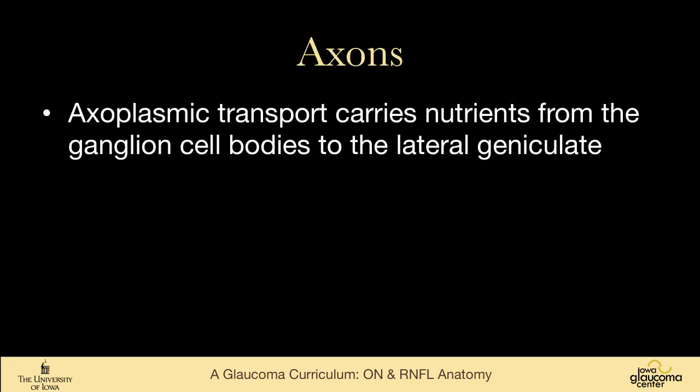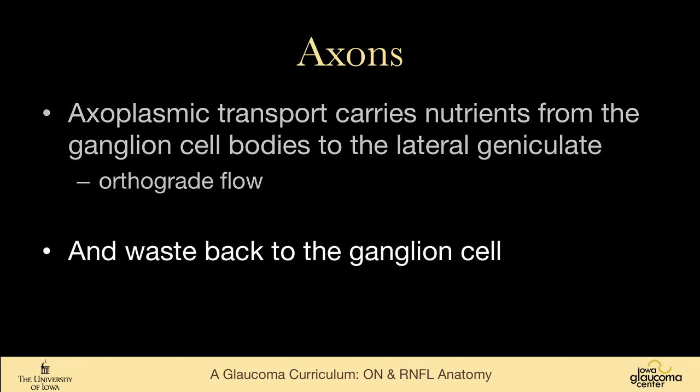In the axons, there is axoplasmic transport that carries nutrients from the ganglion cell bodies to the lateral geniculate — a really long course when you think about it. That's called orthograde flow. Waste then goes back to the ganglion cell, and that is retrograde flow.